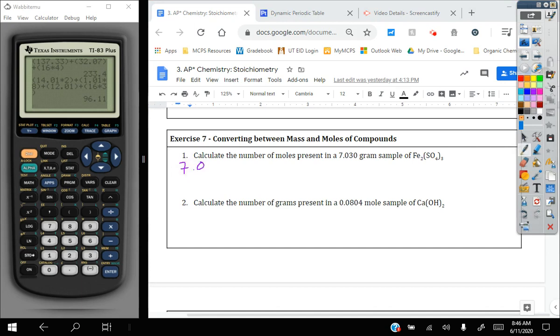So I have four significant figures in my starting amount here. 7.030 grams of iron sulfate. And specifically iron sulfate. If I want to convert this to moles, my desired unit is on top. One mole of Fe2SO4 subscript 3. And then we're going to have grams of Fe2(SO4)3 on the bottom.